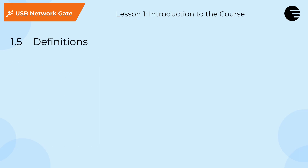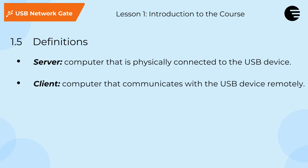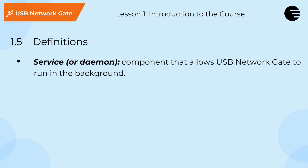Before we begin developing the sample applications in the coming videos, it will be helpful to get started with a few definitions. For our purposes, we will refer to the server as the machine — whether it be a PC, microcomputer, or smartphone — that is physically connected to the USB device. The client is the machine that will communicate with the USB device over the TCP/IP protocol. A GUI is the graphical user interface of an application. A service is a component that allows USB Network Gate to start when the machine is booted and run as a process in the background.